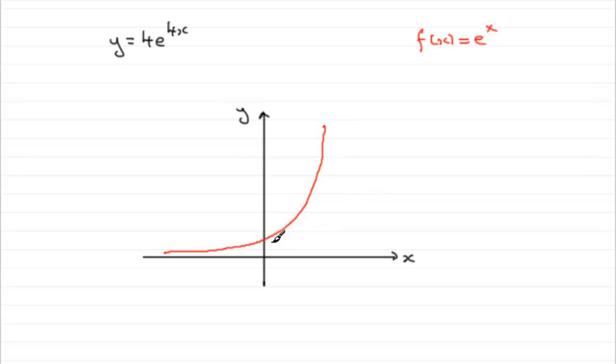So, that point would be 1. And then, to draw the graph of e to the 4x, let's just do this in green.